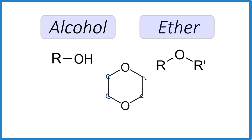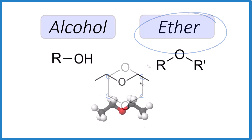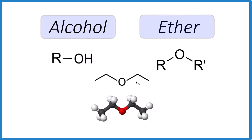Let's do another one — this one's a little more difficult. Note that the carbons are where the lines meet, right here and here. Is this an alcohol or an ether? You can see the pattern: we have a carbon single bonded to oxygen, and this oxygen single bonded to carbon. Same thing down here, so this is going to be an ether.